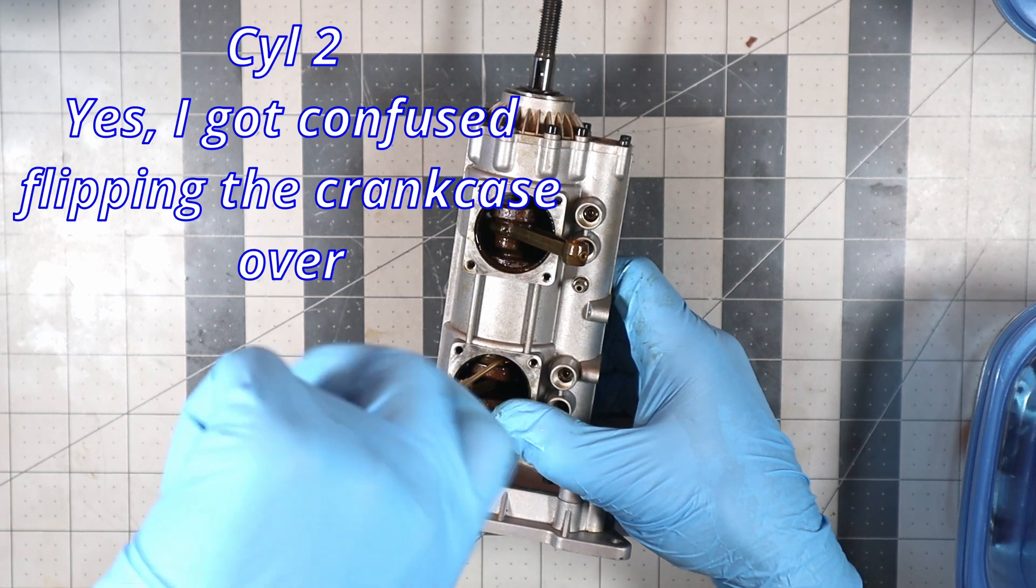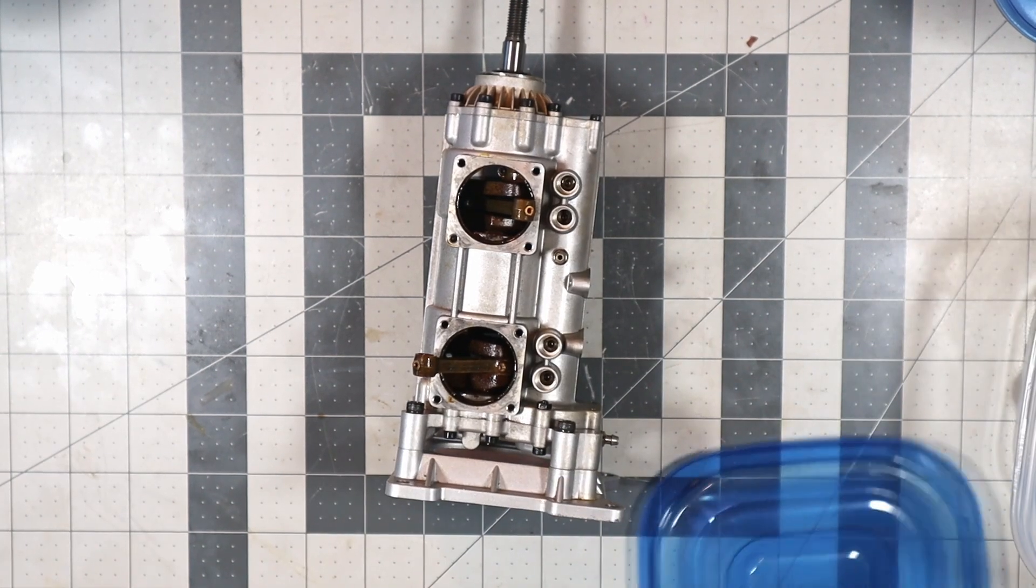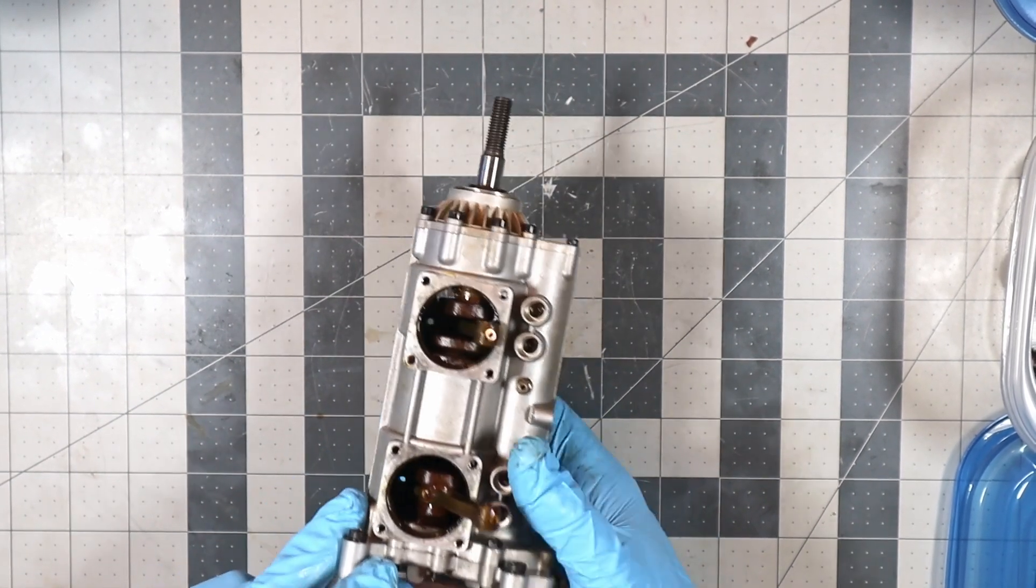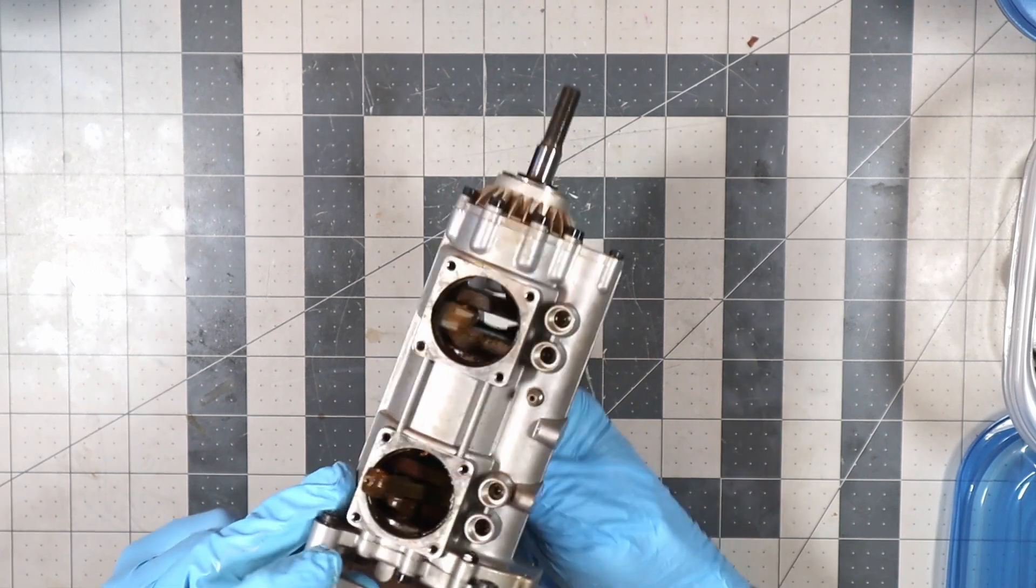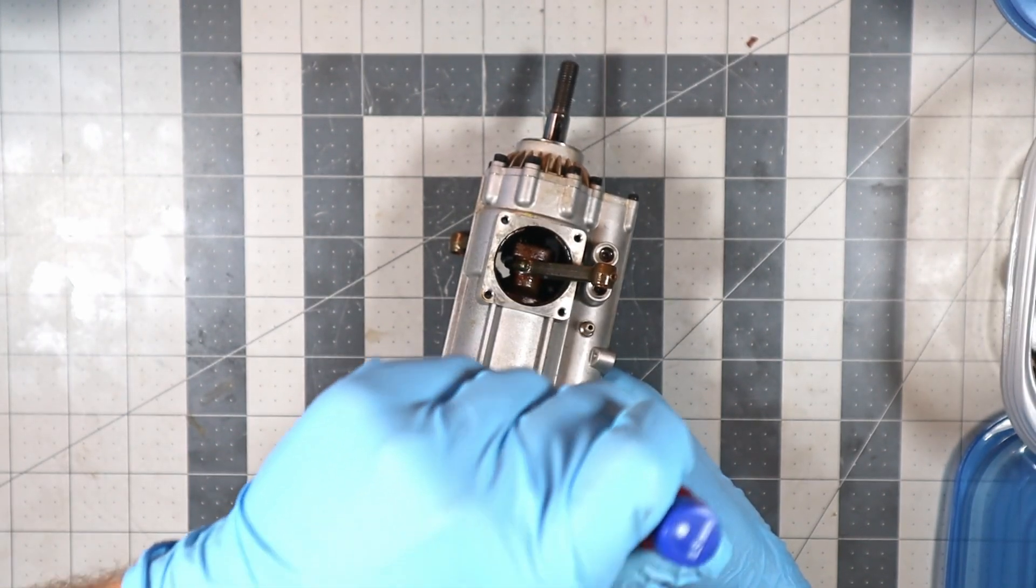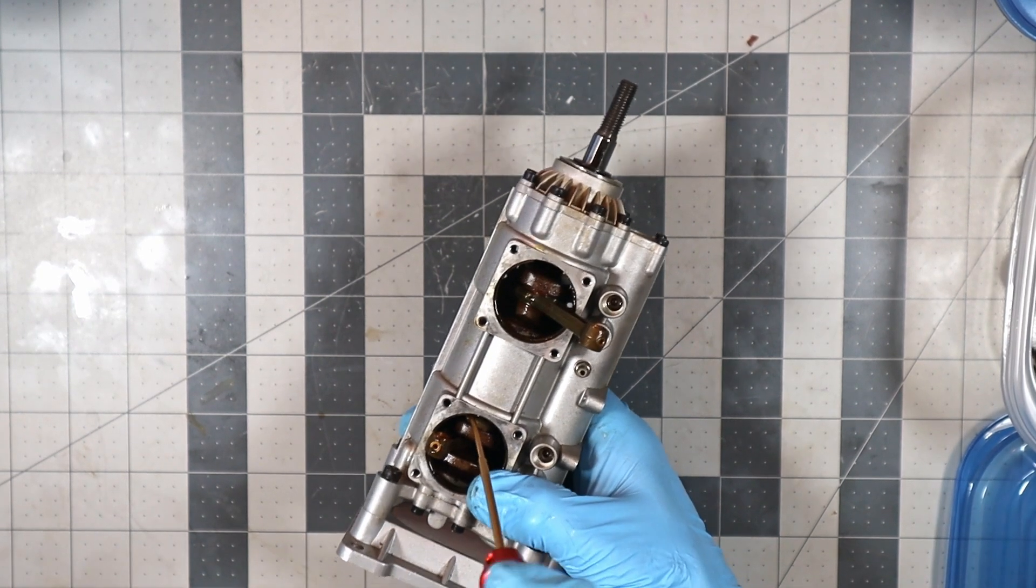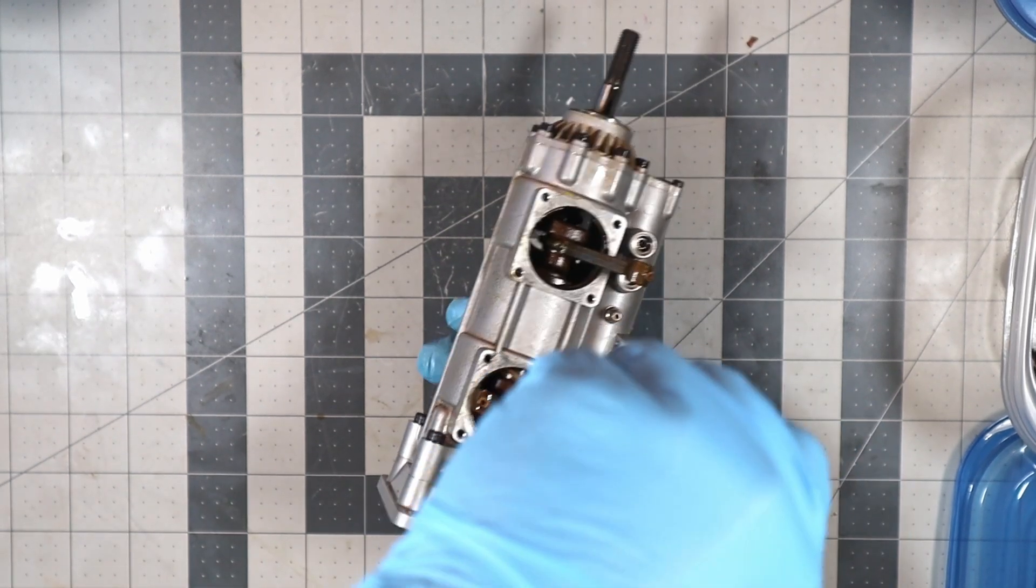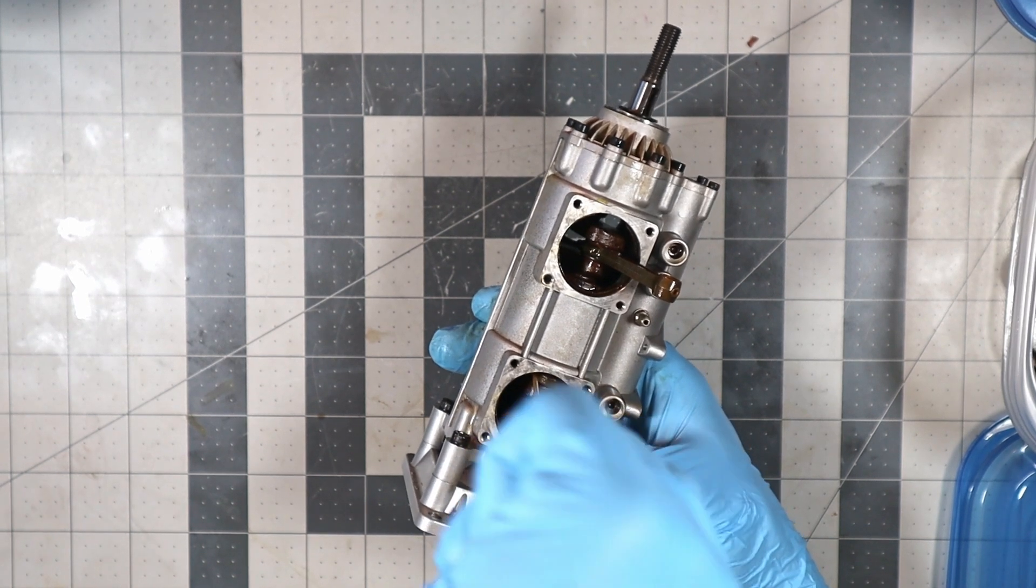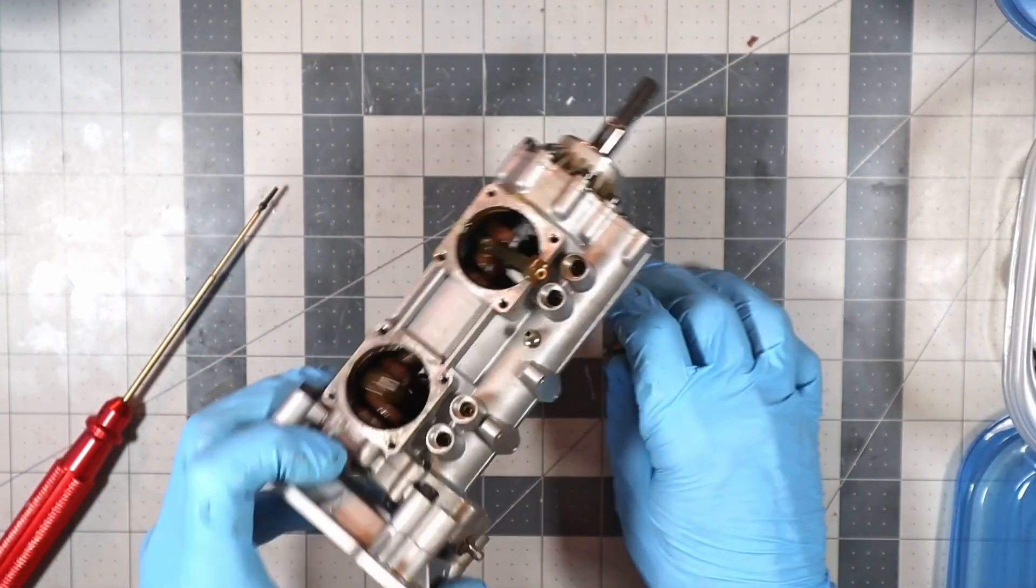So this is cylinder number one. Where did you go? There you are. And you've got to sit here and kind of finagle around and find these. Rotate it around so you can find these screw heads.